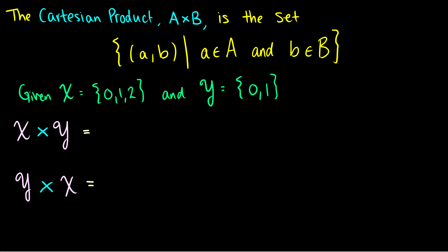So imagine I have a set X containing {0,1,2} and I have a set Y containing {0,1}. And I want to find the Cartesian product. Well, that's just the set of ordered pairs where the first element will come from X, and the second element will come from Y. So if it's X cross Y, the first element comes from X, the second from Y. If it's Y cross X, then we reverse it.